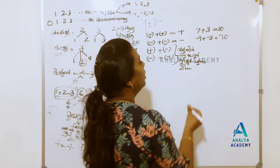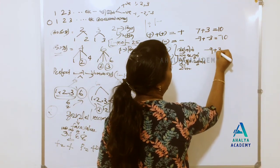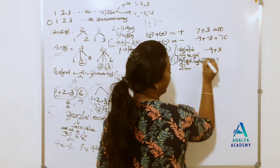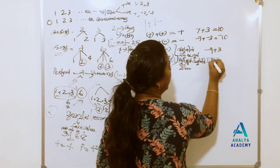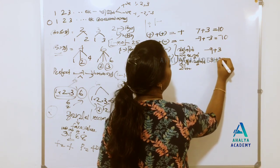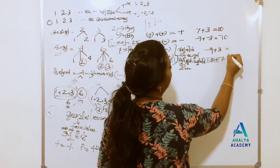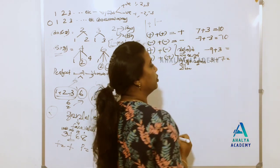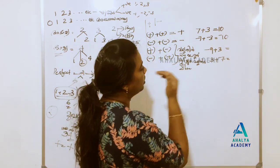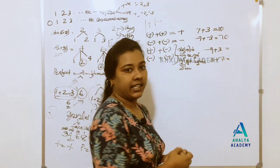Minus 9 plus 3 — now we will write this as the same thing. This is 3 plus minus 7, this is 2. I have to write this down. This is minus 9 plus 3.